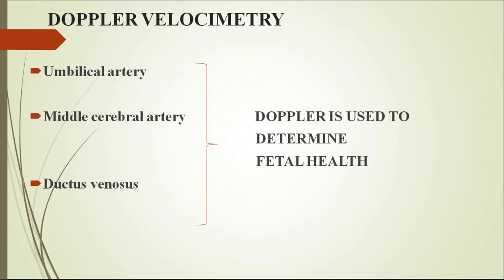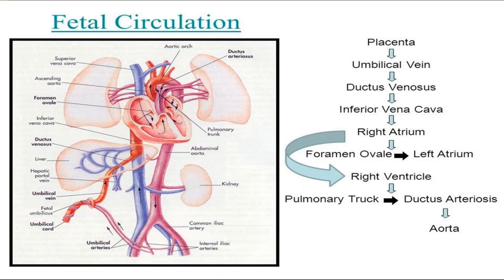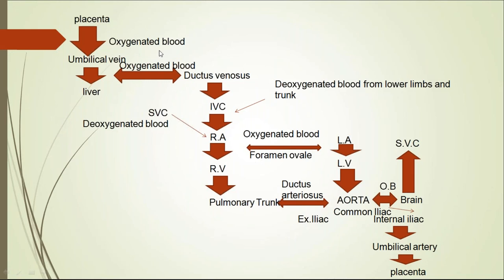Doppler velocimetry: umbilical artery, middle cerebral artery, and ductus venosus Doppler are used to assess fetal health. In fetal circulation, oxygenated blood from the placenta goes to the umbilical vein, then ductus venosus, inferior vena cava, right atrium, right ventricle, and from the right atrium through the foramen ovale to the left atrium and left ventricle, then pulmonary trunk to ductus arteriosus, aorta, common iliac arteries, umbilical artery, and back to the placenta.